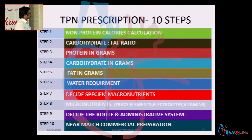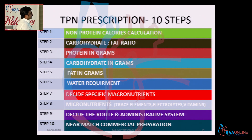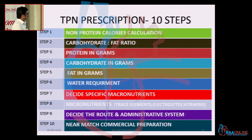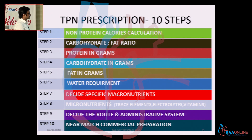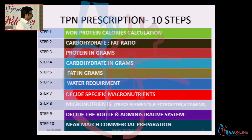It is very easy steps. Step 1 is non-protein calories calculation. Step 2 is carbohydrate and fat ratio decision. Step 3 is protein in grams calculation. Step 4 is carbohydrate in grams. Step 5 is fat in grams. Step 6 is water requirement. Step 7 is decide specific macronutrients. Step 8 is micronutrients, trace elements, electrolytes and vitamins. Step 9 is decide the route and administration system. The last step is near-match commercial preparation.